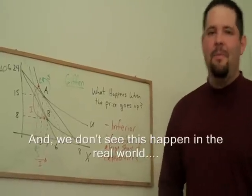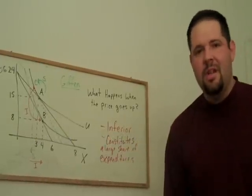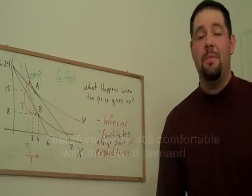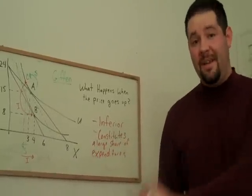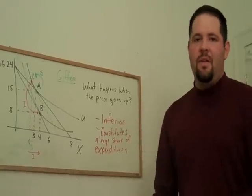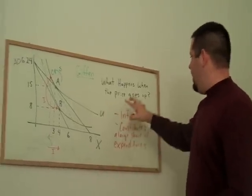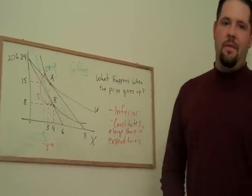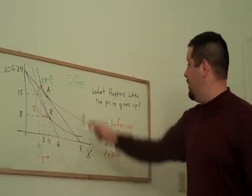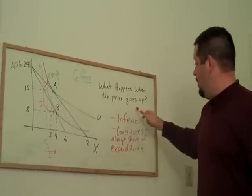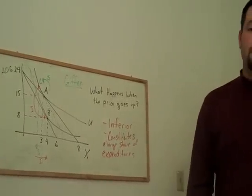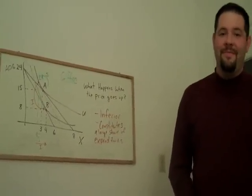Now, you don't find many situations where people are in such dire straits. That's a really bad situation to be in, to be spending a lot of your income, a significant fraction of your income, on an inferior good. It's really difficult to find exceptions to this law of demand. But, now you know where to look. Just look for the Giffen goods, where they might be inferior, and they constitute a large share of your expenditures.